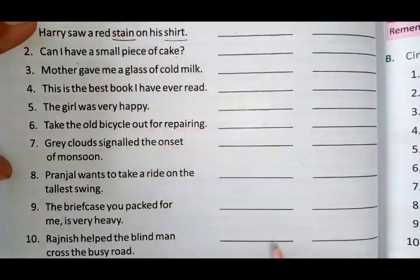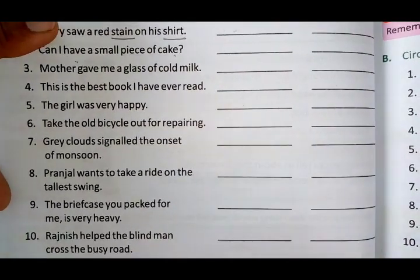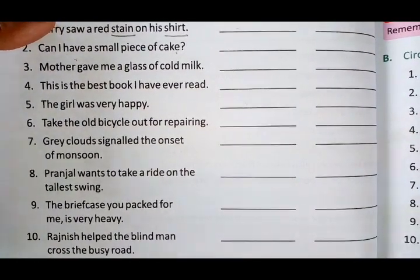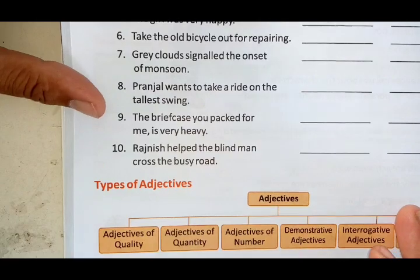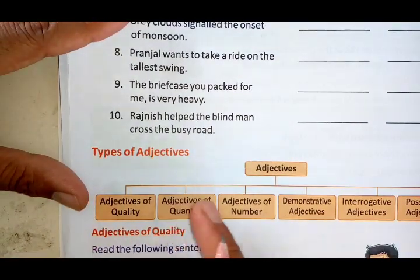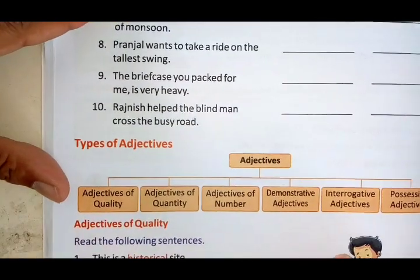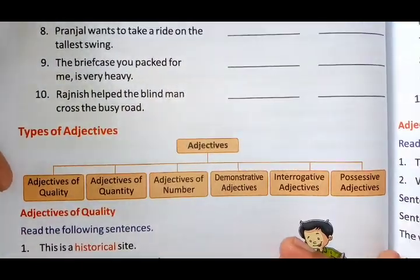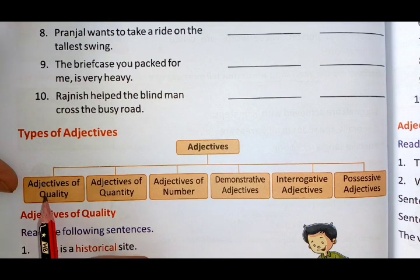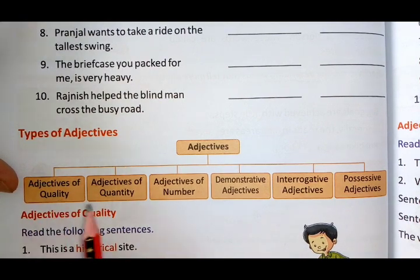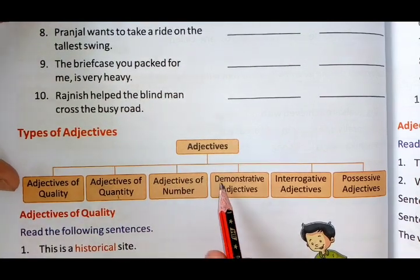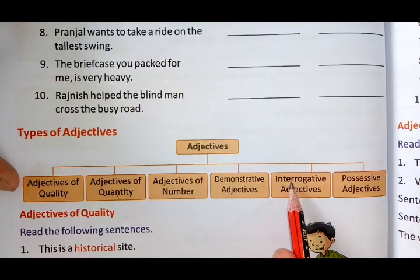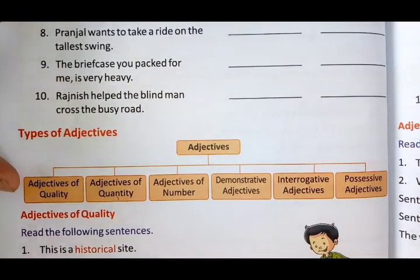In the next video I will send you the answers or I will send a PDF for the answers. The next topic is types of adjectives. There are six types of adjectives: first, adjectives of quality; second, adjectives of quantity; third, adjectives of number; fourth, demonstrative adjectives; fifth, interrogative adjectives; and sixth, possessive adjectives. There are six types of adjectives.